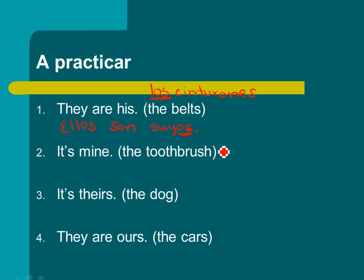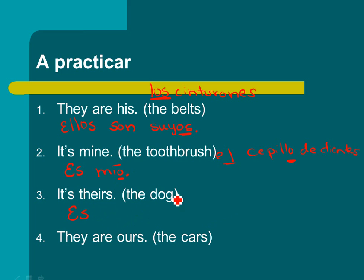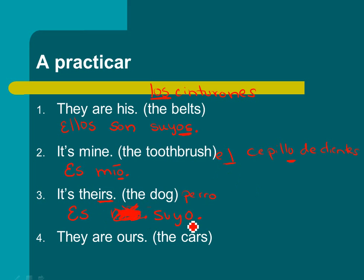It's mine — toothbrush — el cepillo de dientes. Always go with the first word: el cepillo — masculine, singular. We want to say 'it is,' which is just es. Es mío — masculine because of the O, and singular because there's no S. It's theirs — we're talking about the dog, el perro — masculine, singular. Es suyo. Even though you might want to say suyos because it's 'theirs,' no — it's always about the object. There's one dog, so es suyo.